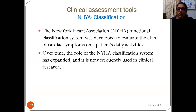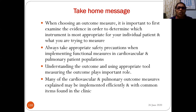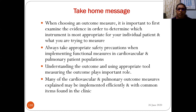The New York Heart Association (NYHA) functional classification system was developed to evaluate the effect of cardiac symptoms on a patient's daily activities over time. Its role has expanded and it is now frequently used in clinical research. Take-home message: when choosing an outcome measure, first examine the evidence to determine which instrument is most appropriate for the individual patient and what you are trying to measure. Always take appropriate safety precautions when implementing functional measures in cardiovascular and pulmonary populations. Understanding and using appropriate outcome tools to measure outcomes plays a very important role in cardiopulmonary physiotherapy.